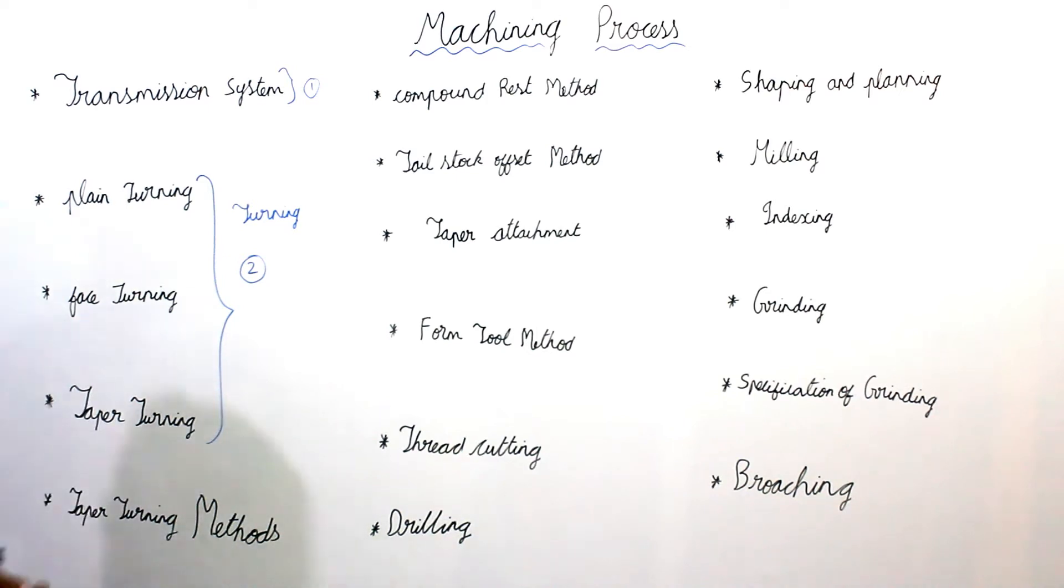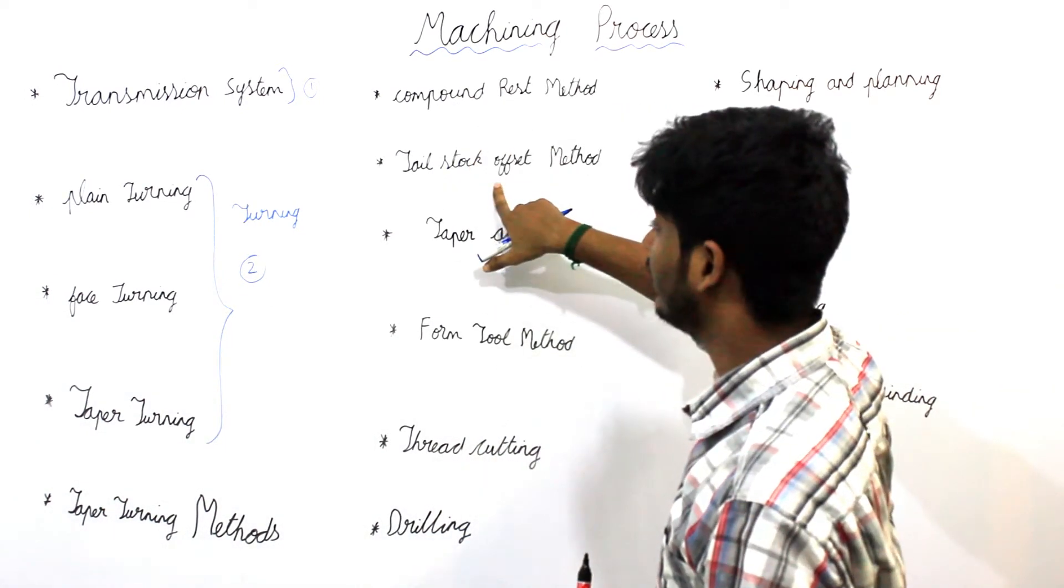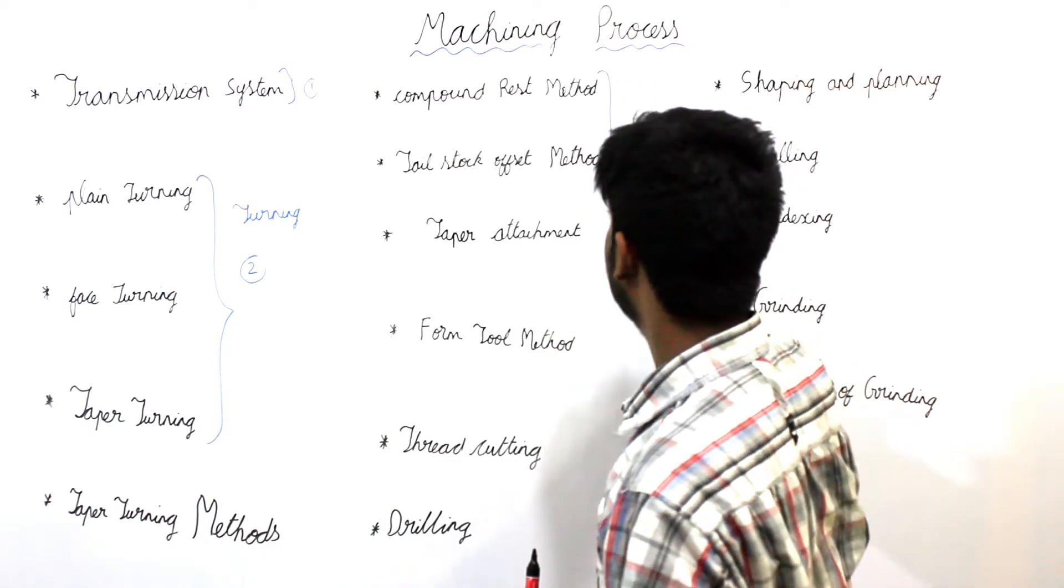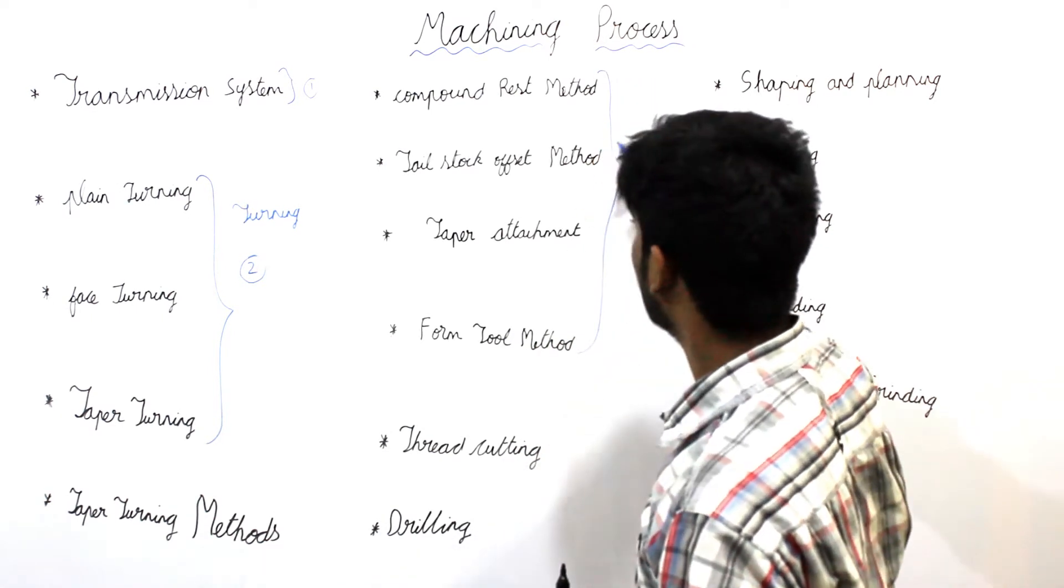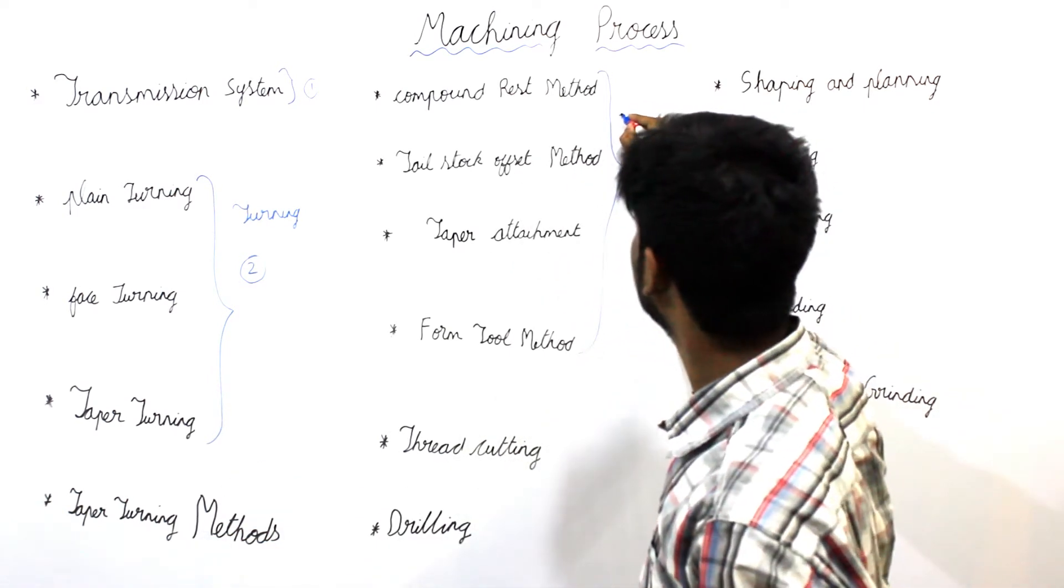Third comes, taper turning methods. We have four taper turning methods, compound rest, tailstock offset, taper attachment and form tool. All these four comes under taper turning methods. This is third topic.